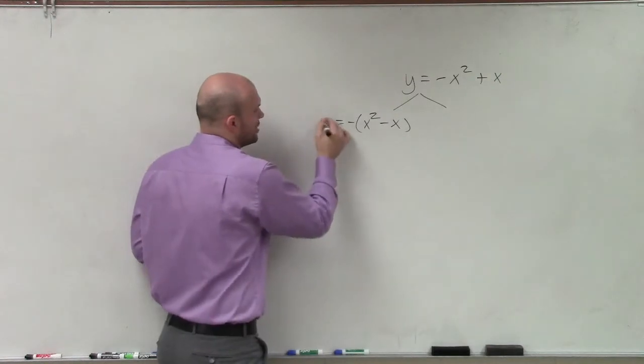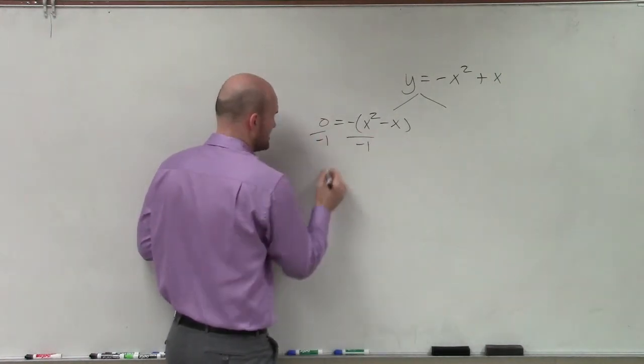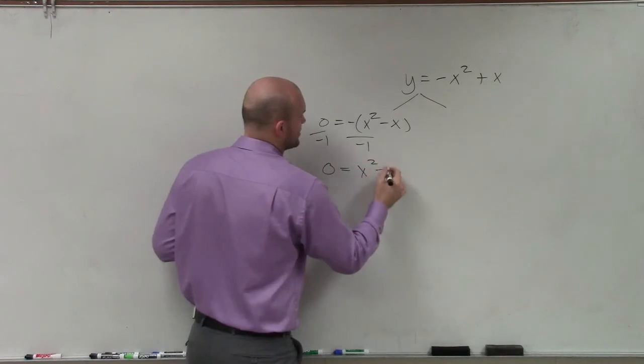Then, as we set this equal to 0, I can divide by negative 1 on both sides. And therefore, I still have 0 equals x squared minus x.